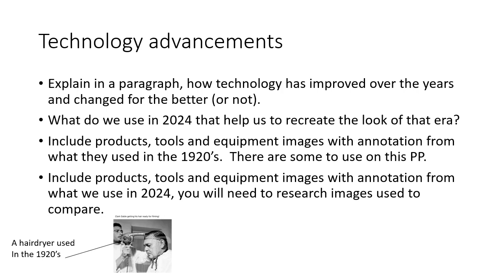Technology advancements: we know that technology has advanced. As you can see at the bottom there's a picture of a hairdryer used in the 1920s. What hairdryers do we have now? How has it advanced? It looks pretty similar — maybe a different shape — but how fast is it, how hot is it? Speak to family and friends who might have used those old-fashioned hairdryers. Find as many electrical items as you can and show how they've improved over the years, with images. Include products, tools and equipment — a lot of writing. Don't forget to do this bit, as it will downgrade your GCSE if you don't include technology advancements.